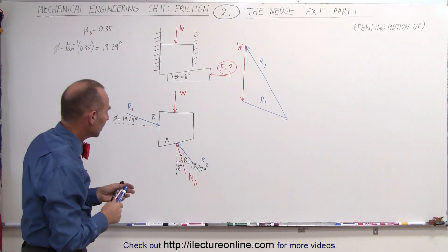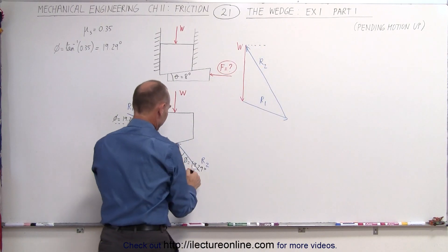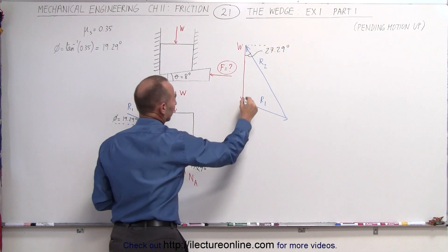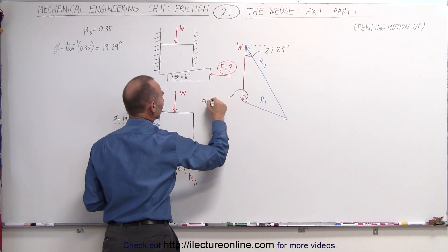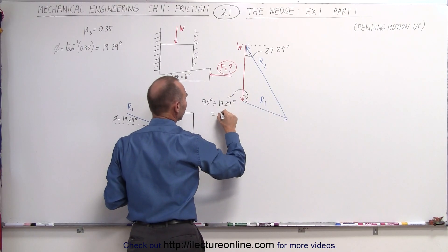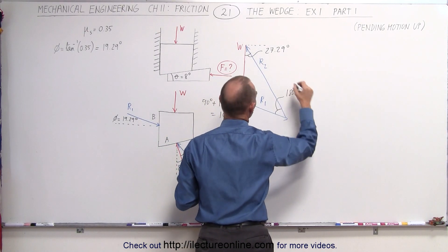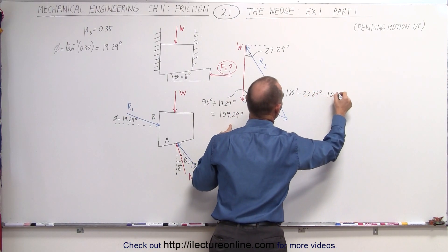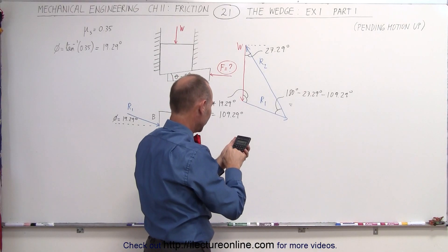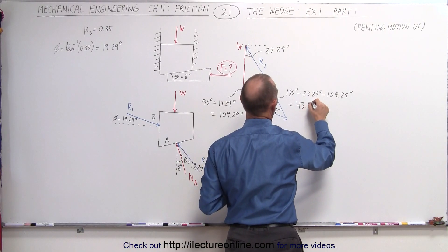We need to find the angles in the force triangle. Drawing a horizontal reference, the angle between R2 and the vertical is a total of 27.29 degrees. The angle on the R1 side is found by taking 90 degrees and adding 19.29 degrees, giving 109.29 degrees. The remaining angle is 180 minus 27.29 minus 109.29, which equals 43.42 degrees.